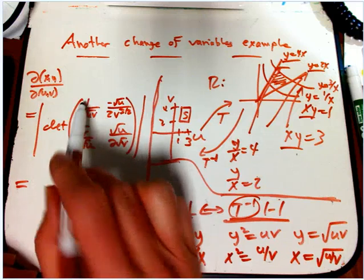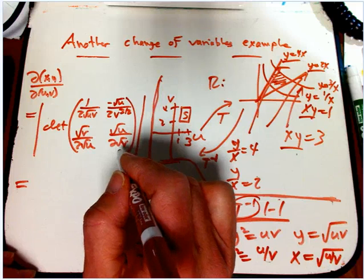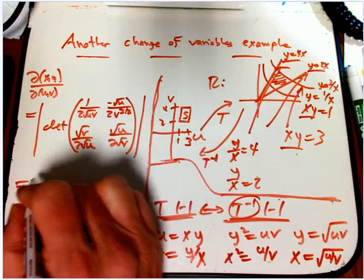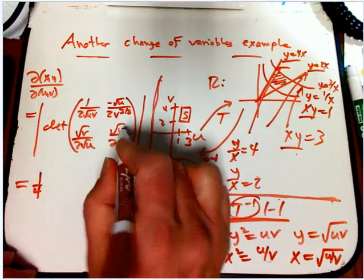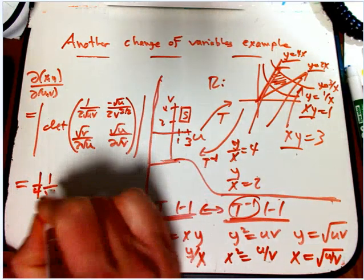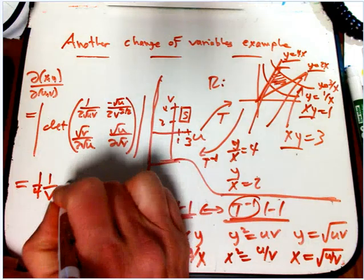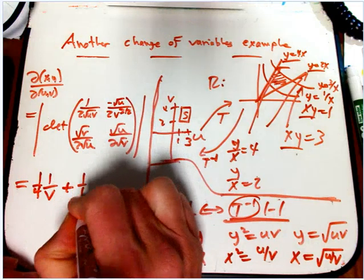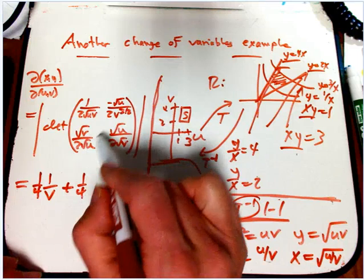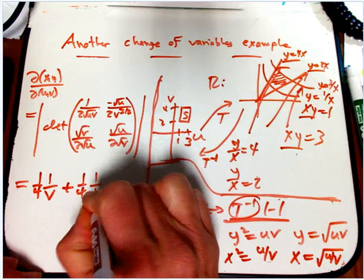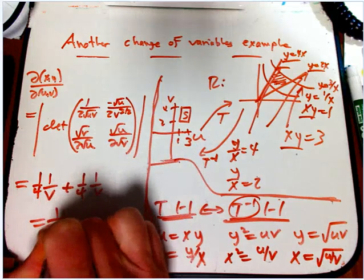Okay, so now we're going to get 1 fourth, the root u's cancel out, and we get 1 over v. Minus a minus is plus, and then 1 fourth, and then root u's cancel out again, root v over v to the 3 halves, 1 over v. And indeed, you get 1 over 2v.